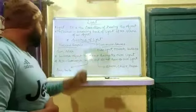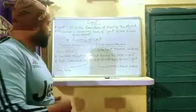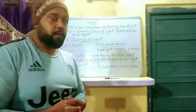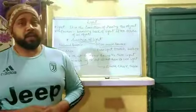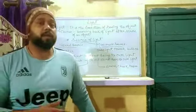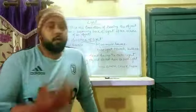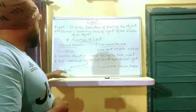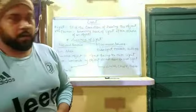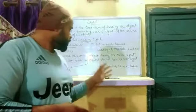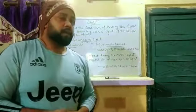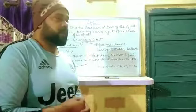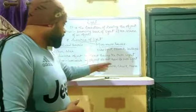Next is luminous object and non-luminous object. A luminous object is an object having its own light — for example, the Sun and the bulb. A non-luminous object is one that cannot produce its own light — for example, stars, chairs, and tables.